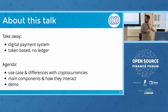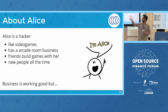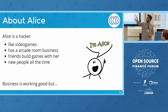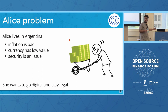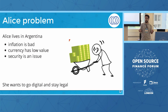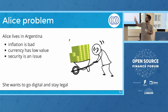This is Alice. Alice likes building video games since she was a kid. She grew up and built an arcade room. The business is going really well, but she has a problem. I am coming from Argentina and Alice is from Argentina. Argentina has a problem with currency — the inflation is very bad. The money is starting to lose value, so she is having a problem with cash.